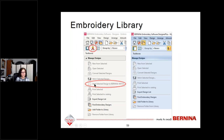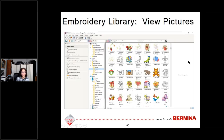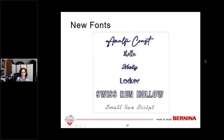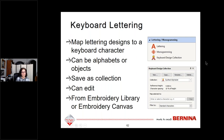Embroidery Library has some changes. You can work with keyboard lettering or send designs to the Bernina Wi-Fi device. You can now view pictures in the library, as in older versions with Portfolio — in version 8 you couldn't view pictures. There are six new fonts. The big news is Keyboard Lettering, where you can map lettering designs to keyboard characters. Those characters can be alphabets or objects, saved as a collection that can be edited — done from either Embroidery Library or Embroidery Canvas.